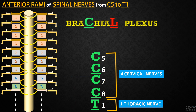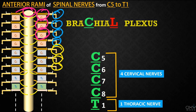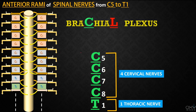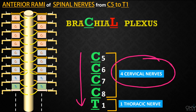Now, this is our spinal cord, these are the spinal nerves, and these are the anterior rami of the spinal nerves. This one is C5, C6, C7, C8, and this one is T1. These anterior rami from C5 to T1 form the brachial plexus.